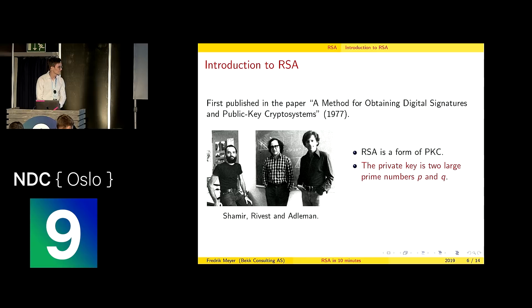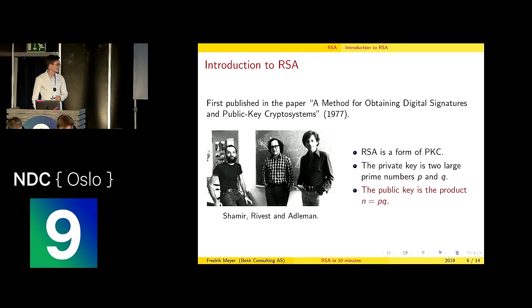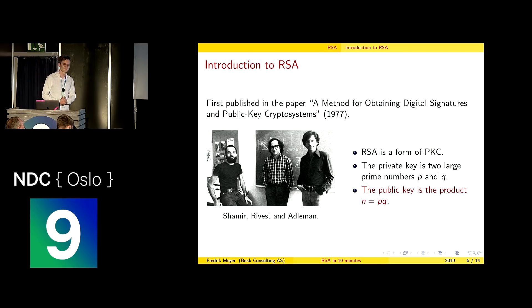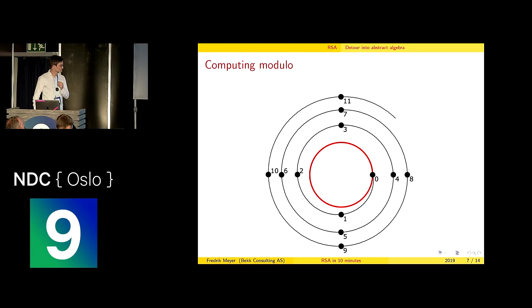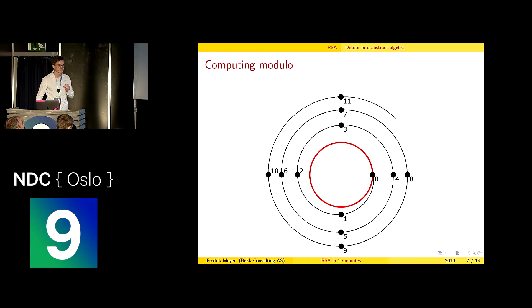RSA is a form of public key cryptography. The private key is two large prime numbers, P and Q — large is essential here. And the public key is a product of those prime numbers. Before I explain how to encrypt and decrypt, I will explain modulo arithmetic — a detour into abstract algebra, as I call it.